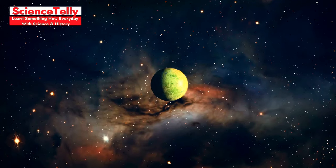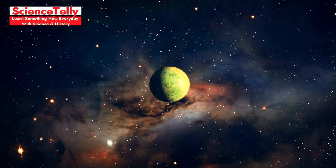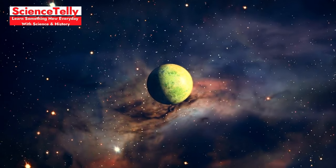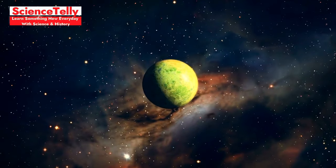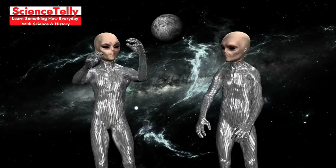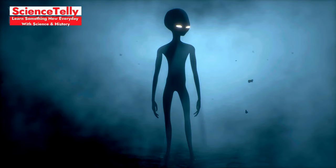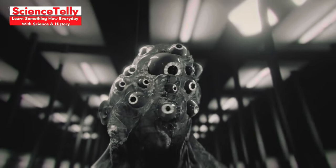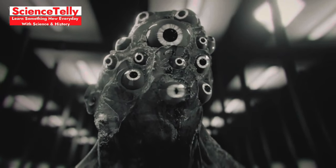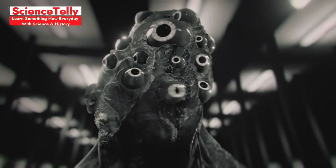Others think that if there are complex alien beings, they could look extremely different from anything on Earth. Their appearance would likely be shaped by the unique conditions of their home planets: gravity, atmosphere, temperature, and available resources. So, could they look like us? It's possible, but unlikely. More likely, they might be completely unrecognizable, with forms adapted to environments we can barely imagine.